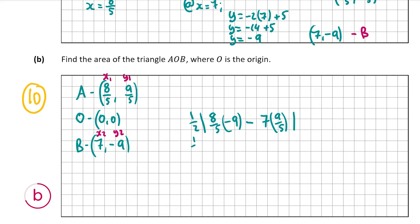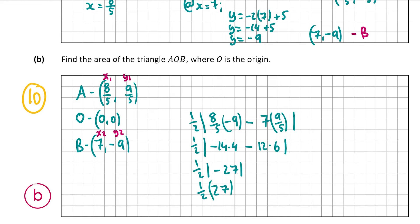That's a half of: 8/5 times minus 9 equals minus 14.4, and then minus 7 times 9/5 which equals 12.6. So minus 14.4 minus 12.6 is minus 27. Therefore it's half the absolute value of minus 27. The absolute value of minus 27 is 27, so the area is half of 27, which equals 13.5 square units.